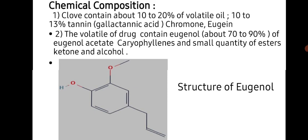Chemical composition: clove contains about 10 to 20% of volatile oil, 10 to 13% tannin, galatonic acid, chromium, and eugenia. The volatile oil of the drug contains eugenol — 90% of eugenol — acetate, chirophylins, and small quantities of esters, ketones, and alcohol.